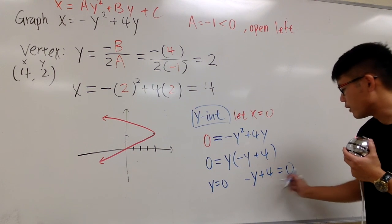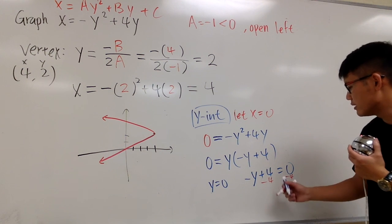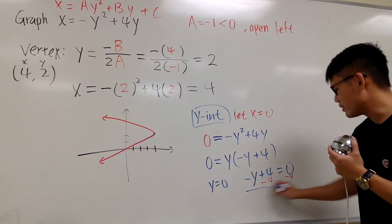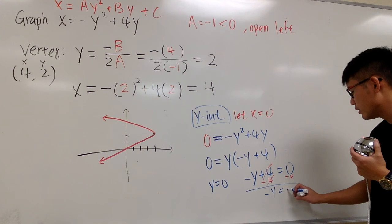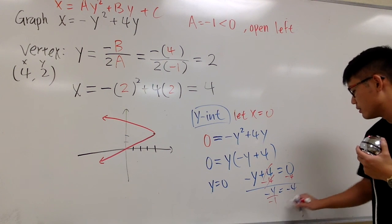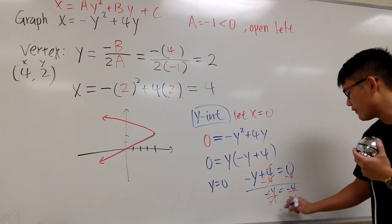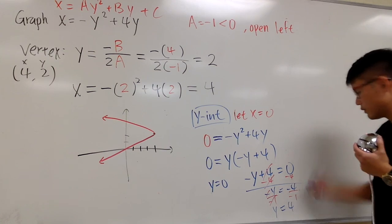For this one, I'm just going to subtract 4 on both sides. So if we have negative y equals negative 4, and divide both sides by negative 1, we have y equals positive 4.